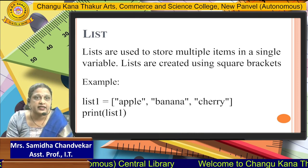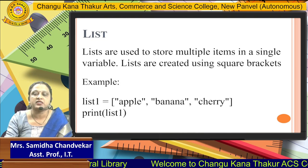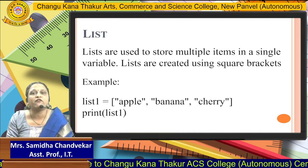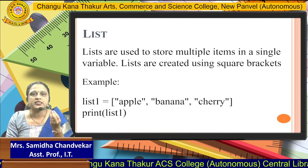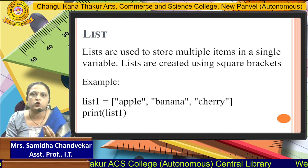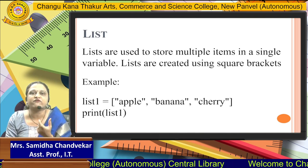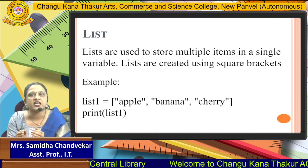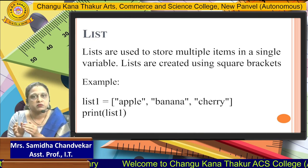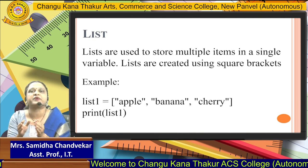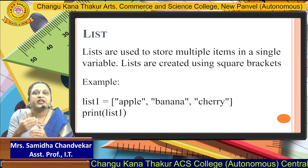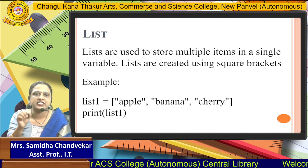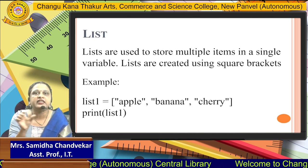How are lists created? Lists are created by using simple square brackets. So how do you define the list? There is a list called list1 — that is the name of the list. Then there are variables: apple, banana, cherry, separated by commas. Commas are used to separate the items. When you want to print that list, there is a print statement: print list1. You will get the list of items.